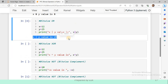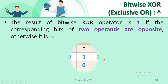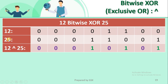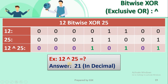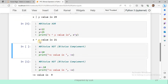Executing the OR program with values 12 and 25 and printing x OR y, the output is 29. Next is bitwise exclusive OR (XOR). The result of XOR is 1 if the corresponding bits of two operands are opposite; otherwise it is 0. From the truth table: when both bits are the same (0,0 or 1,1), the result is 0; when bits are opposite (0,1 or 1,0), the result is 1. For 12 XOR 25, the output is 21.